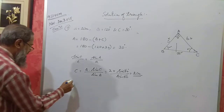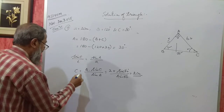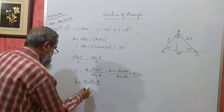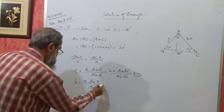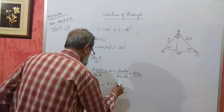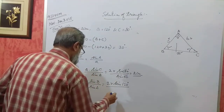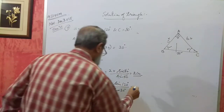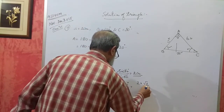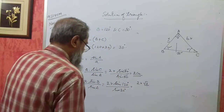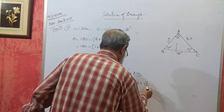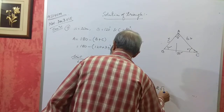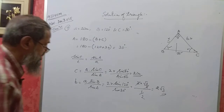Then we can take B equal to A into sin B divided by sin A. So that is 2 into sin 120 degrees divided by sin 30 degrees. Sin 120 equals sin(180−60) which gives root 3 by 2. So you will get 2 root 3. B is equal to 2 root 3, C is equal to 2 centimeters.